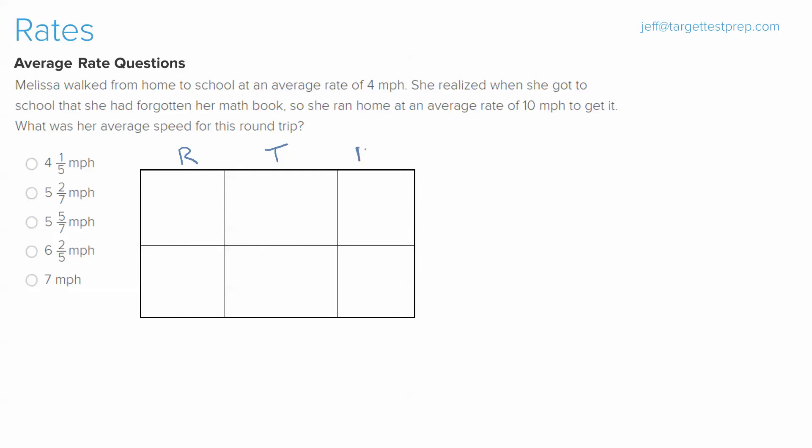And as you can see what I'm starting to do before we get into the question, as always, is label my table with a rate column, a time column, and a distance column. Now as I've shown before, special types of rate problems do have their own special type of formula.